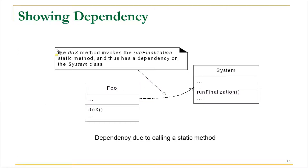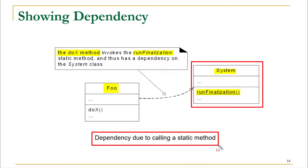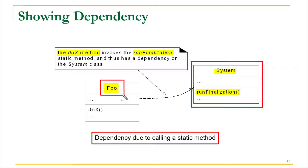In another scenario, the doX method invokes runFinalization, which is a static method of the System class. We are calling this runFinalization method from the Foo class, which makes the Foo class dependent on the System class. This dependency arises from one class calling a method of another class.